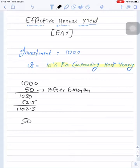So total returns or total interest in one year we have generated is 102.5. So this is on an investment of 1000. By investing 1000 we have generated a return of 102.5.